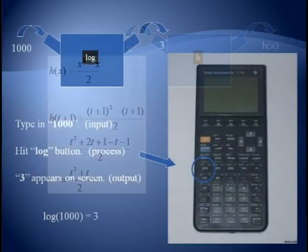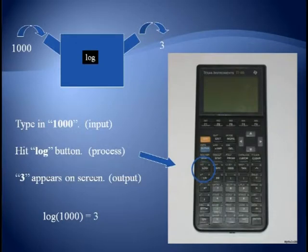For our last machine example, consider a calculator, an actual machine. It has many built-in functions. A logarithm is a typical one. We type in a number like 1,000. This is our input. Then we hit the log button, and this is like throwing it into our machine, and the output value is 3. We can write this in our shorthand form as log(1,000) = 3.